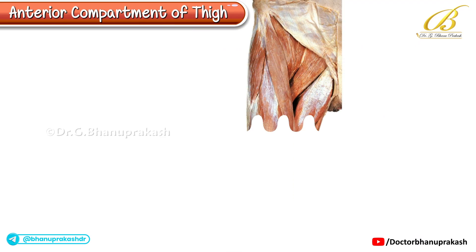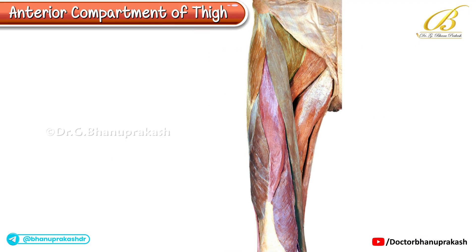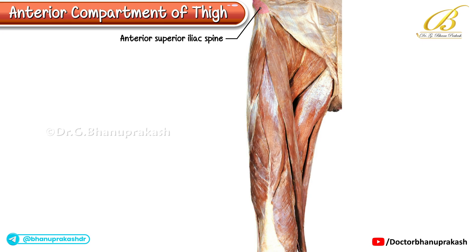This cadaveric image demonstrates the superficial muscles of the anterior compartment of the thigh. The anterior superior iliac spine can be seen at the superolateral aspect. Let us begin the demonstration from lateral to medial. The lateral-most muscle is the tensor fasciae latae, which inserts into the iliotibial tract.